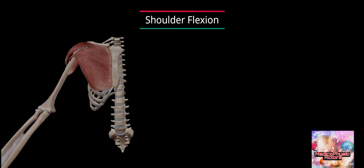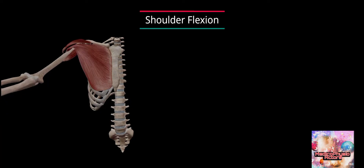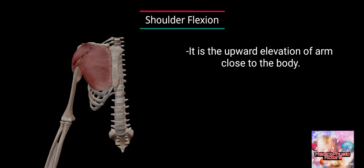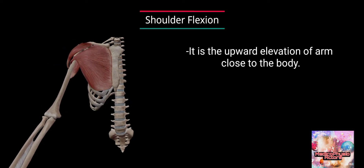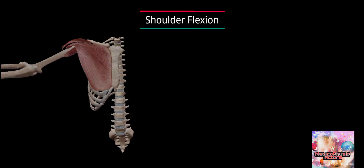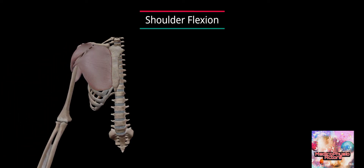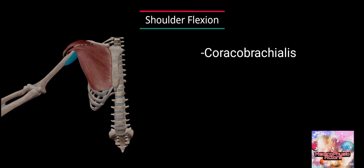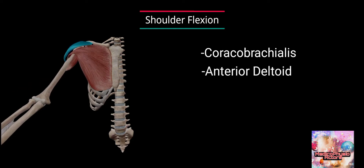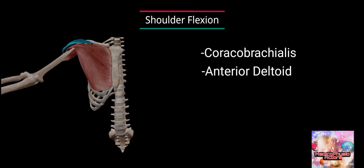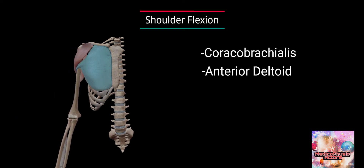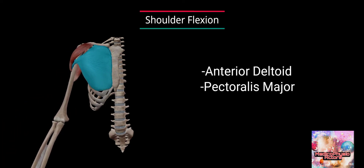Shoulder flexion is the upward elevation of the arm close to the body. The muscles active are coracobrachialis, anterior deltoid, and pectoralis major.